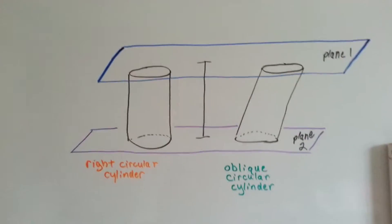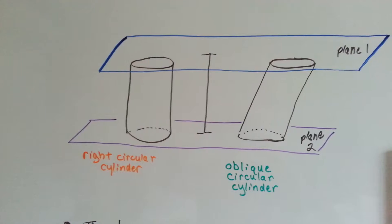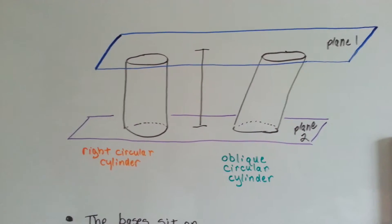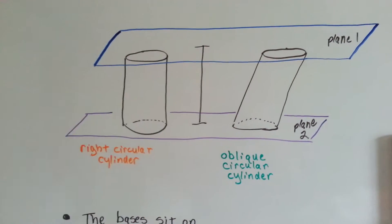Alright, well, there's two types of cylinders. There's a right cylinder, which goes straight up and down, or an oblique one that kind of slants.